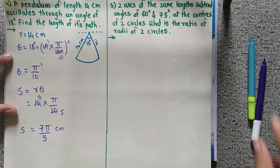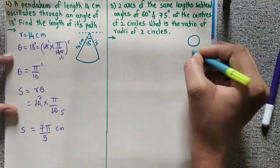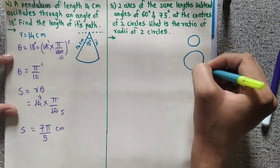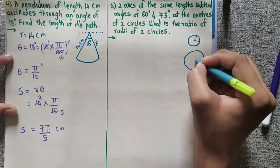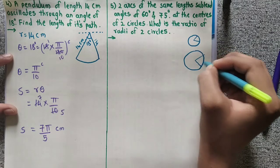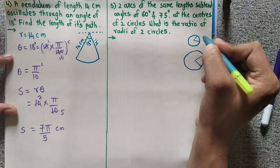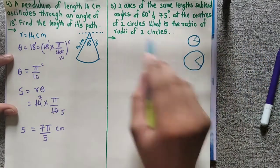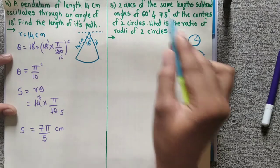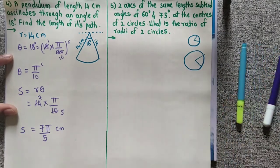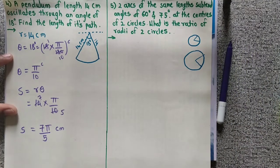Meaning: there are two circles, one small and one large. The arcs of both circles have the same length. The angle subtended by one is 60 degrees and the other is 75 degrees. We need to find the ratio of their radii.